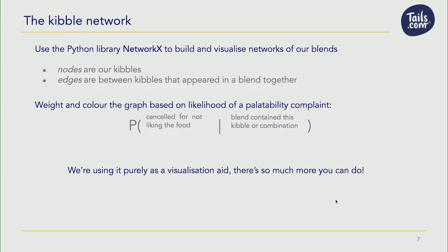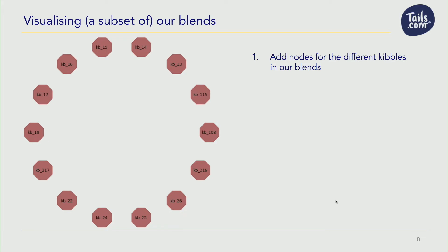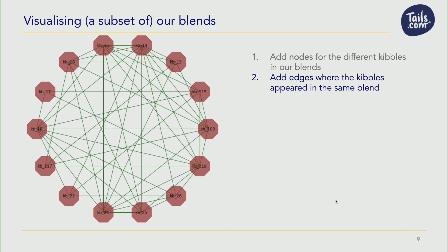We're using it here as a visualization tool to see if, by visualizing our dry dog food recipes that we're sending out to customers as a network, we can understand which recipes work, which ones the dogs like, and which ones they don't like as much. We start with a bunch of our kibbles — these are our dry dog food ingredients — laid out in a circular pattern. These are the nodes of the graph. Then we add edges: if two kibbles have appeared in a bag of dog food together, we draw a line between them. As you can see, there are quite a lot of lines connecting all of the kibbles, which means most of our food has appeared in a bag with the rest — which makes sense for a tailor-made brand. But it doesn't really help us understand exactly what's going on.